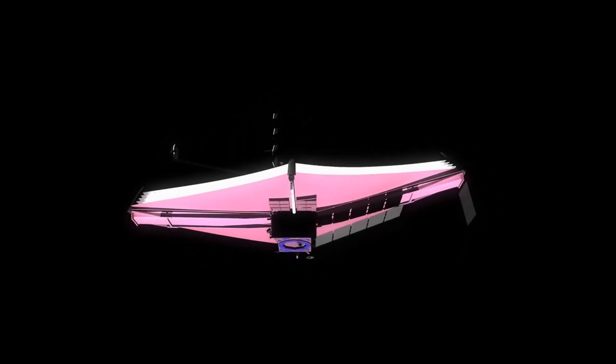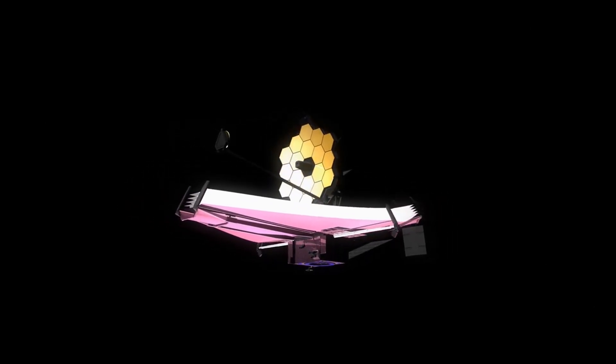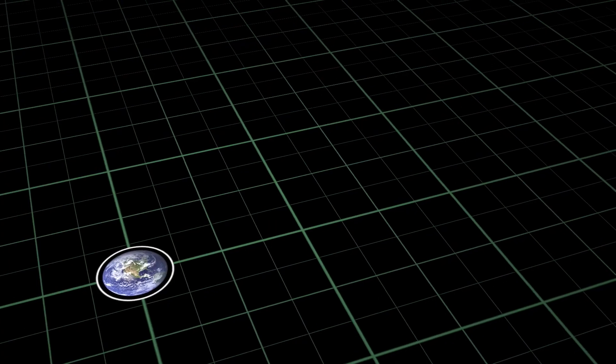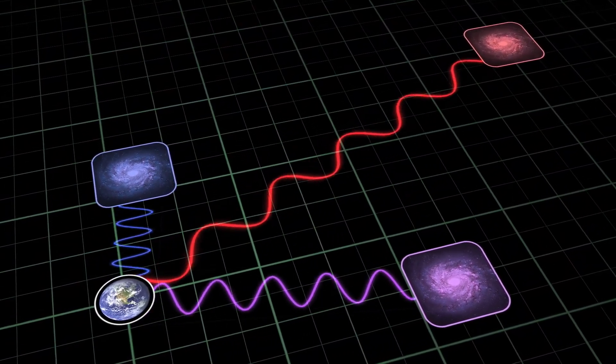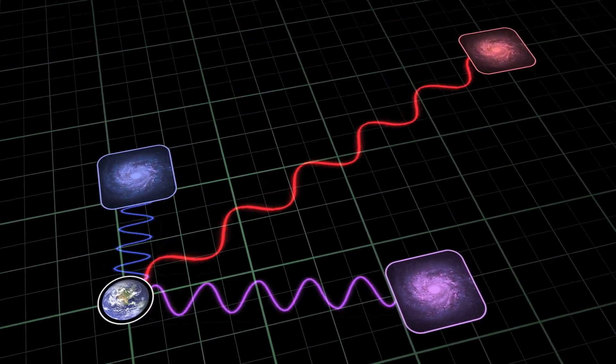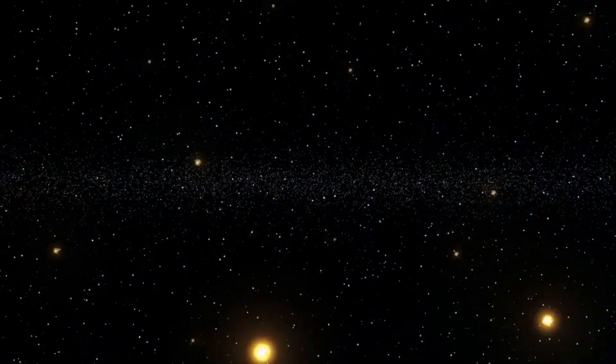The James Webb Space Telescope, launched in December 2021, is a revolutionary next-generation space telescope that can look back in time and verify the accuracy of galactic evolutionary models. This telescope is specifically designed to detect infrared light, which is the stretched-out form of ultraviolet light emitted by newly formed stars. This allows us to observe galaxies that formed right after the Dark Ages, when the universe was still very young and galaxies were just beginning to form. Additionally, James Webb is able to penetrate gas clouds and observe the formation of stars and planets that would otherwise be invisible.